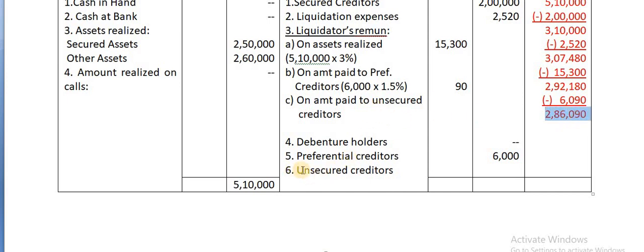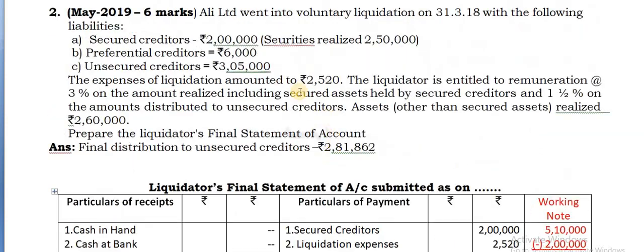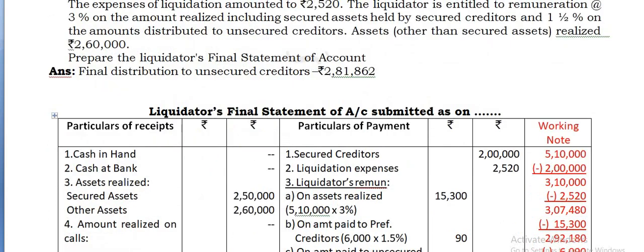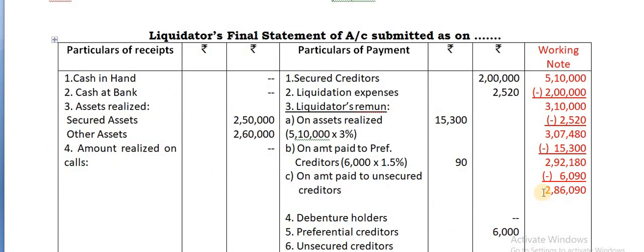Next, you have to pay towards the unsecured creditors. What is the amount payable to unsecured creditors? The claim is 3,05,000, but cash available is less.